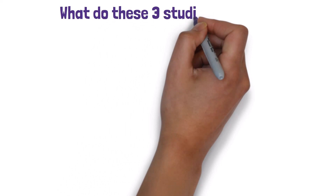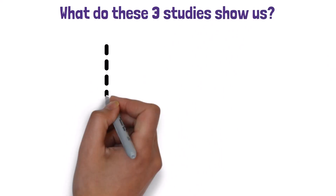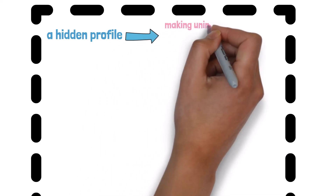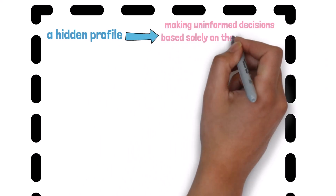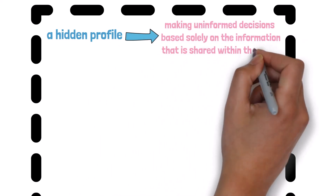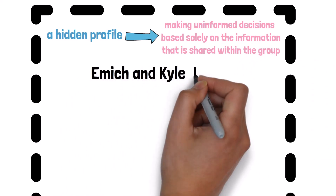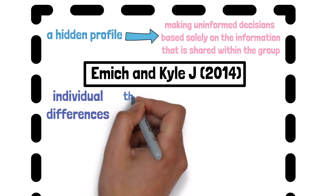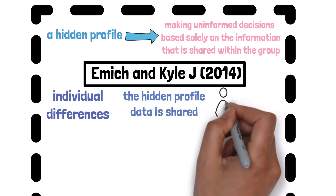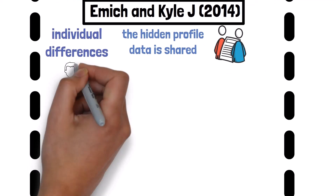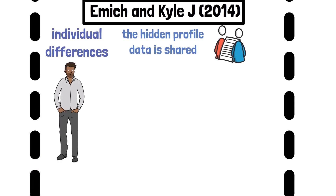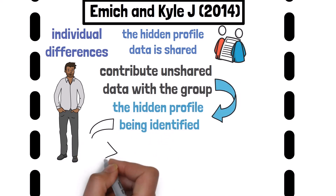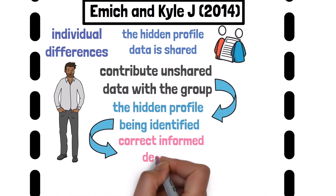So what do these three studies show us? Past research shows that during group decision-making, the hidden profile construct often leads to the group collectively making uninformed decisions based solely on shared information. Emich and Kyle in 2014 demonstrated that individual differences play a key role in whether hidden profile data is actually shared. Some individuals are naturally more confident than others and are therefore more likely to contribute unshared data, leading to the hidden profile being identified and the correct, informed decision being made.